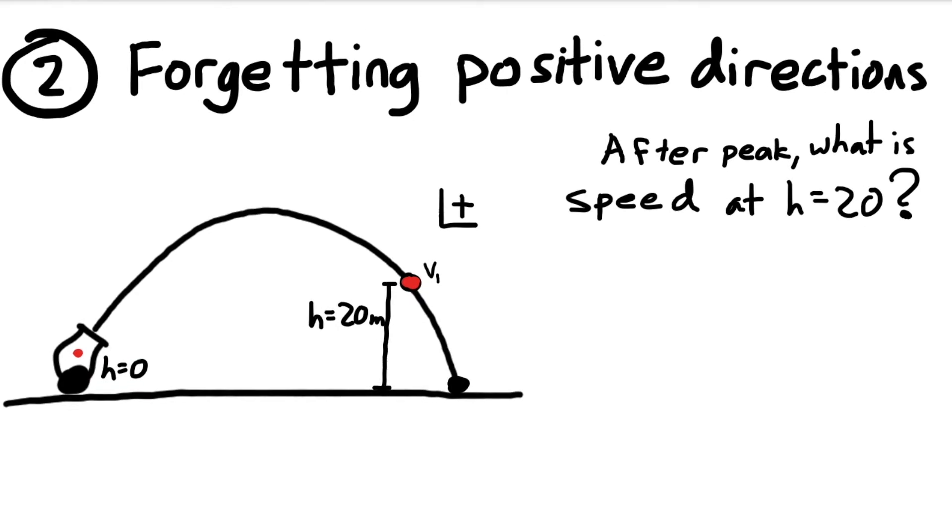The second common error is forgetting which direction is positive. In this case, we're being asked to solve for the velocity of the projectile after it reaches the peak, so on its way down. We can use our v-y-1 squared is equal to v-y initial squared plus 2a delta y.